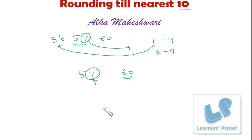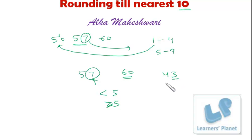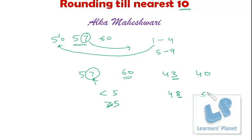To be precise: look at the number at the units place. If it is less than 5, round to the lower side; if it is greater than or equal to 5, round to the upper side. For example, 43 has units digit 3, which is less than 5, so round down to 40. And 48 has units digit 8, which is more than 5, so round up to 50.